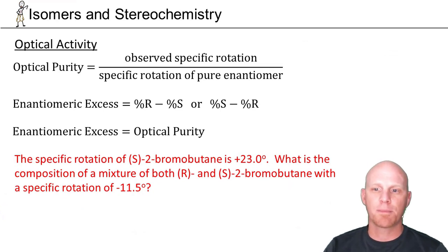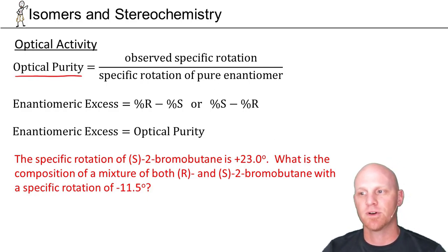The last thing to address with optical activity here is what's called optical purity. We'll take the observed specific rotation divided by the specific rotation of a pure enantiomer. This implies that you've got at least some combination of two enantiomers together.